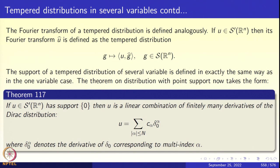The same thing is true for the Fourier transform in several variables. To define it, use the same prescription as before: u is a tempered distribution, and u-hat paired with g equals u paired with g-hat. This prescription defines a continuous map from S(R^n) to the scalars and hence a tempered distribution. The support of a tempered distribution in several variables is defined exactly as in the one-variable case: the smallest closed set outside which the distribution is zero.